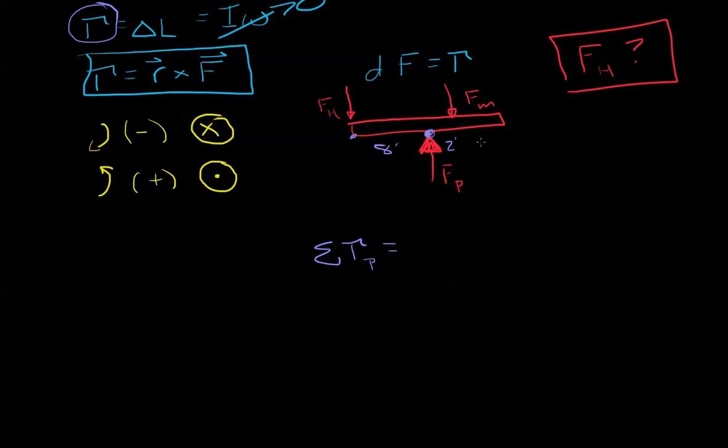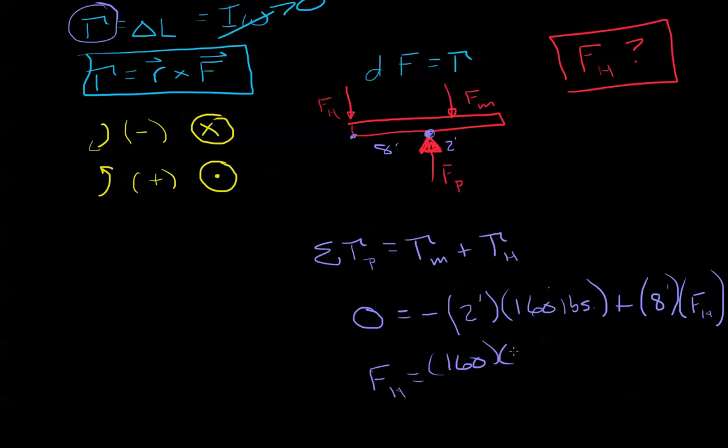We know that the sum of the torques about the pivot equal the torque due to me plus the torque due to her. Now the torque due to me is going to be negative because it's going in the negative direction: two feet times 160 pounds. Now we're going to add the torque due to her which is eight feet times force due to her, and the sum of that is zero. Wonderful, we now have one equation, one unknown. Let's get force her by itself. We get 160 times two over eight equals 40 pounds. Great, so we know that she's at 40 pounds.